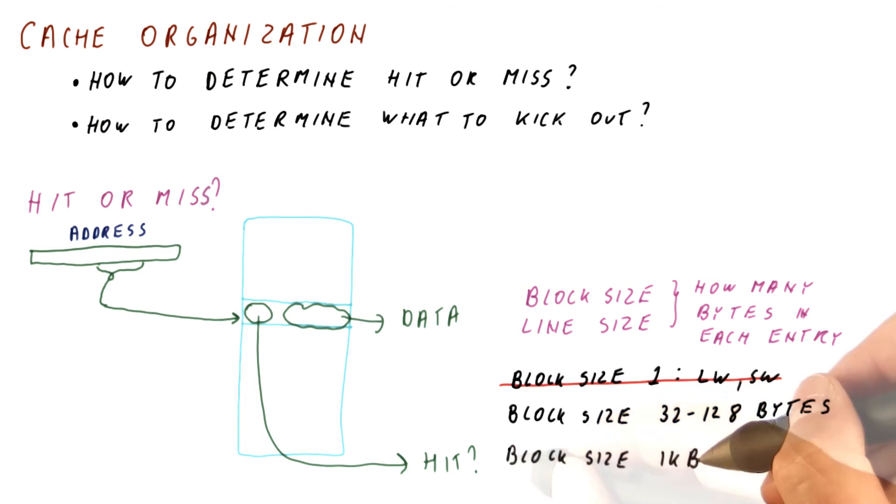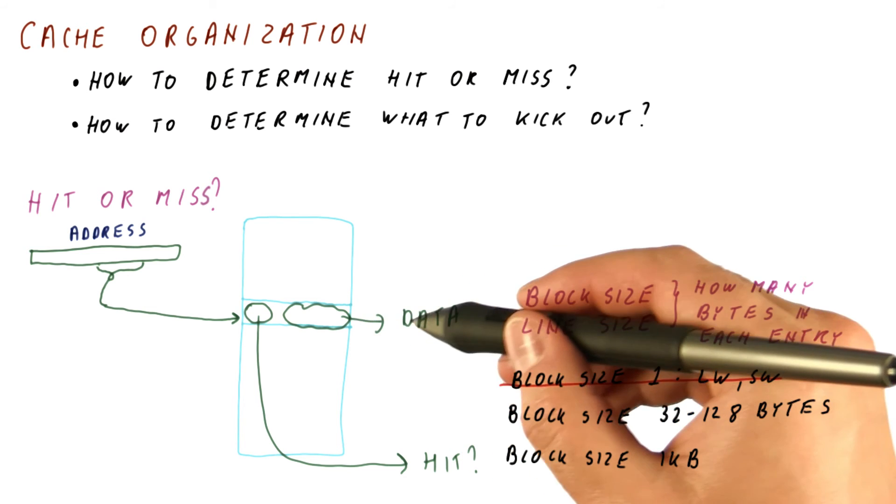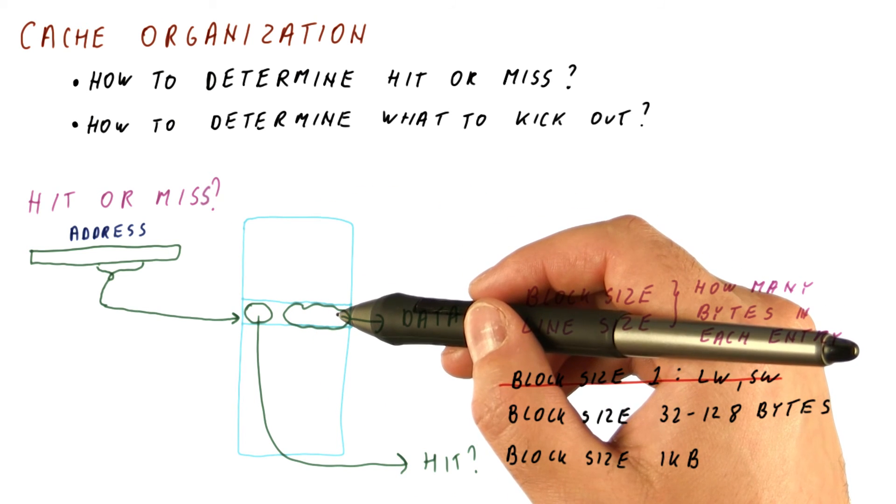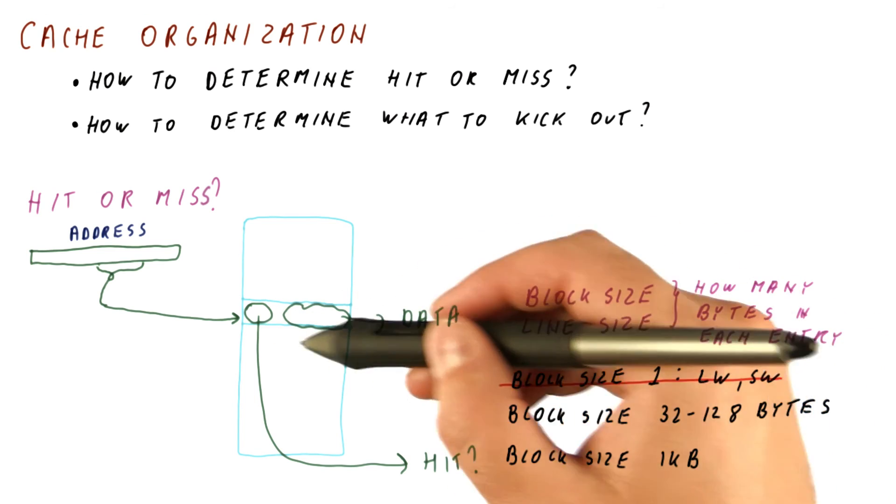Now let's look at block sizes of something like one kilobyte. In that case, what happens is we fetch a lot of data from memory every time we have a miss. And if there is not enough locality, a lot of the data will not be used.